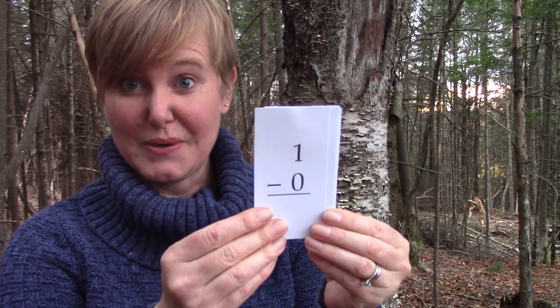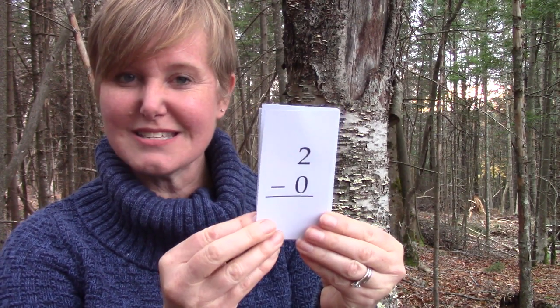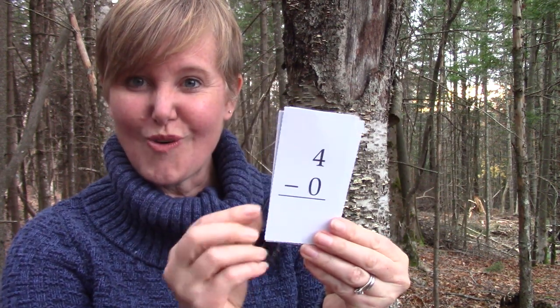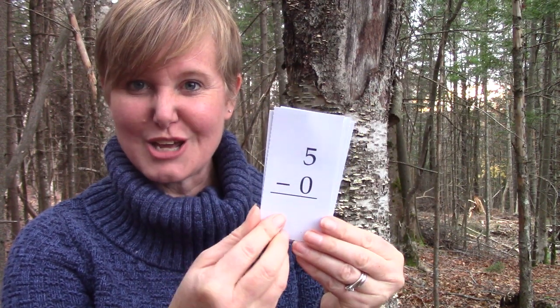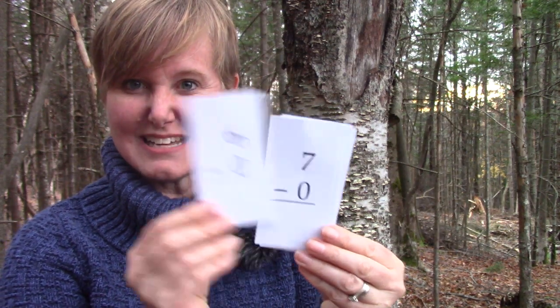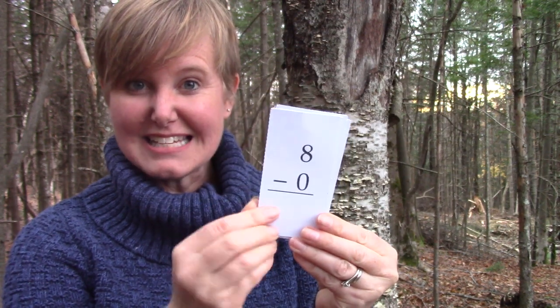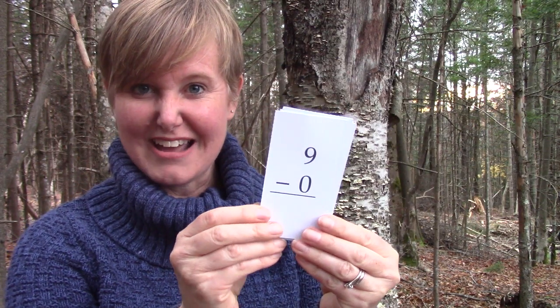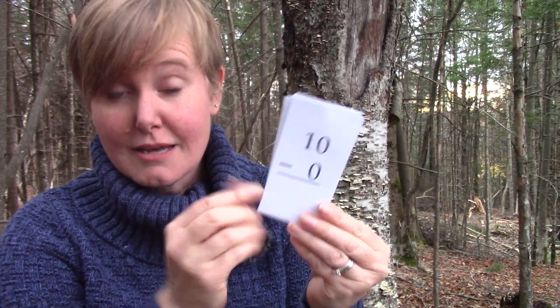One take away zero is one. Two take away zero is two. Three take away zero is three. Four take away zero is four. Five take away zero is five. Six take away zero is six. Seven take away zero is seven. Eight take away zero is eight. Nine take away zero is nine. And ten take away zero is ten.